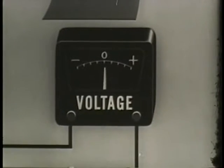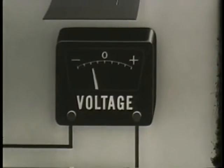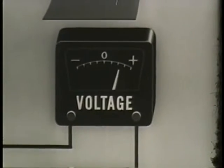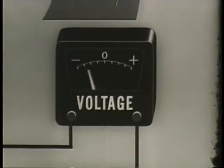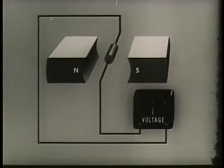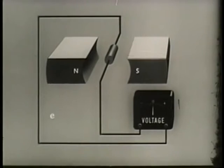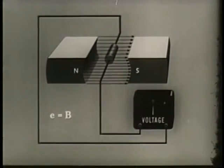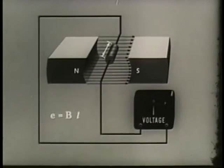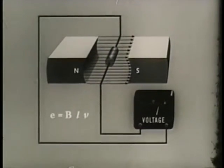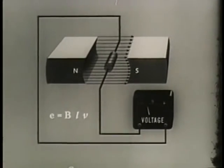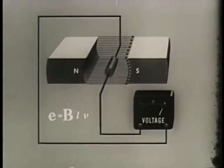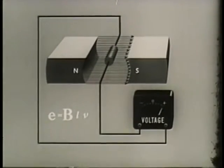The amount of EMF generated at any instant is determined by three factors: the strength of the magnetic field — that is the number of lines of force; the length of the conductor cutting the lines of force; and the velocity with which the conductor is turning. We can determine the amount of instantaneous EMF by a simple formula. The instantaneous EMF E equals B, the strength of the field, times L, the length of the conductor cutting lines of force, times V, the velocity of the conductor. An increase in the number of lines of force or the strength of the field increases the instantaneous EMF in the conductor.